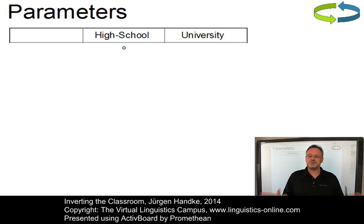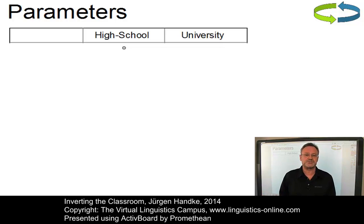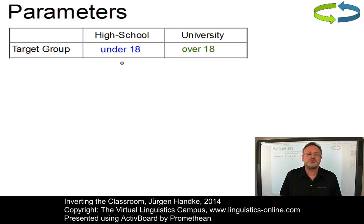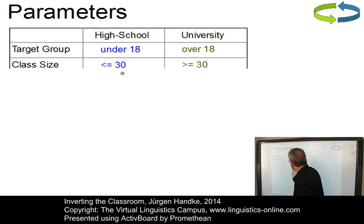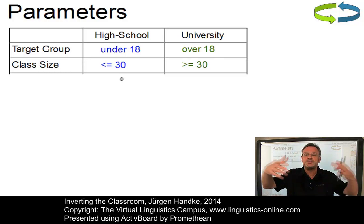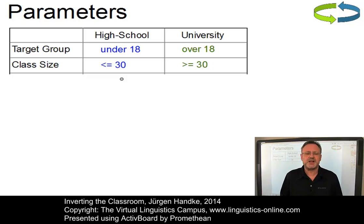There are several parameters that distinguish the teaching scenarios used at high school from those used at most universities. Take for example the average age of the target groups. Whereas most high school kids are younger than 18, the standard student at university has come of age and is in most cases older than 18. Or take the class size. High school classes are generally smaller than those at universities, where you can have classes with several hundreds of students. As a consequence, university teachers often do not even know their students' names.